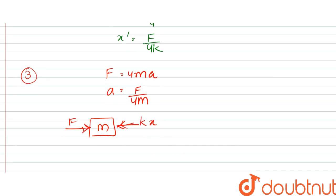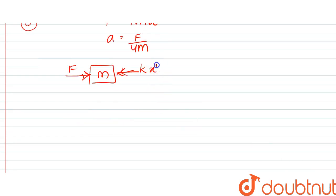We can write kx double dash. So F minus kx double dash would be equal to m into a. So F minus kx double dash would be equal to F by 4. So kx double dash would be equal to 3F by 4.